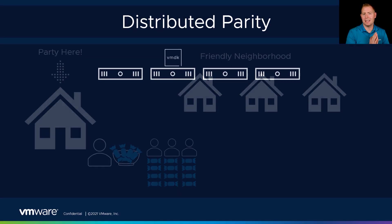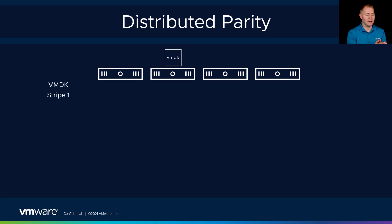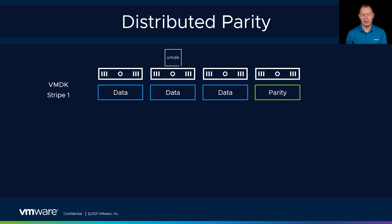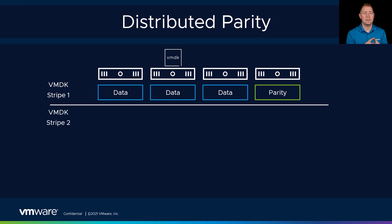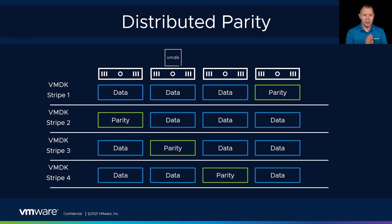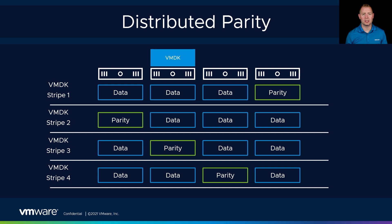The way vSAN works is we practice a distributed parity system. We take our data and say host one, host two, host three get a piece of data for that first stripe. For our fourth host, we track who got data and what they actually got. Then because we practice distributed parity, I shift everything over. For the second stripe, I tell host one to remember who got what data. We move that parity over one more — host two now tracks that stripe. We keep shifting parity around so all hosts participate. Those block sizes are 1K in size.